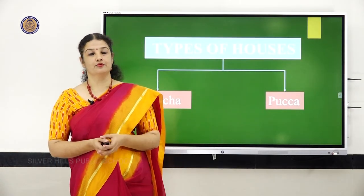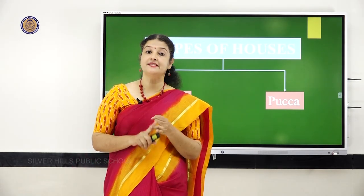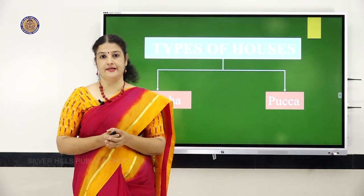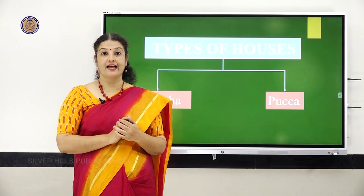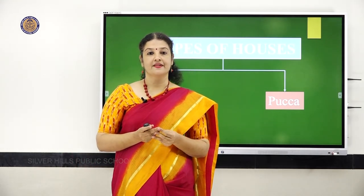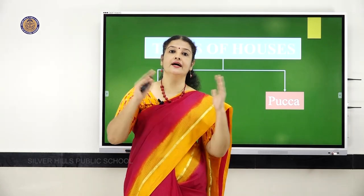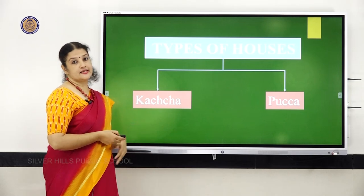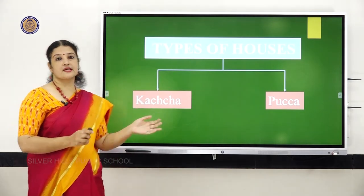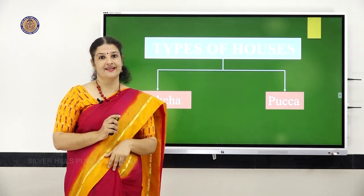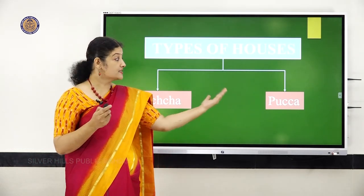There are different types of houses, and the kind of house a person lives in depends on certain features: the climate of that place, the materials used to build the house, and the requirement of the family. Houses in cold places are different from houses in hot places. Basically, houses are divided into two types: kaccha houses and paka houses. Kaccha houses are not strong — they are temporary houses usually found in villages. Paka houses are strong and permanent; they last for a long time.